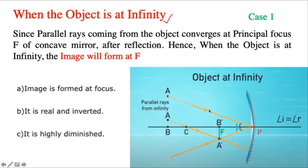The angle I equals the angle R by the law of reflection. This is the normal acting on the concave mirror. Since parallel rays coming from the object converge at the principal focus F of the concave mirror after reflection, when the object is at infinity, the image will form at F.